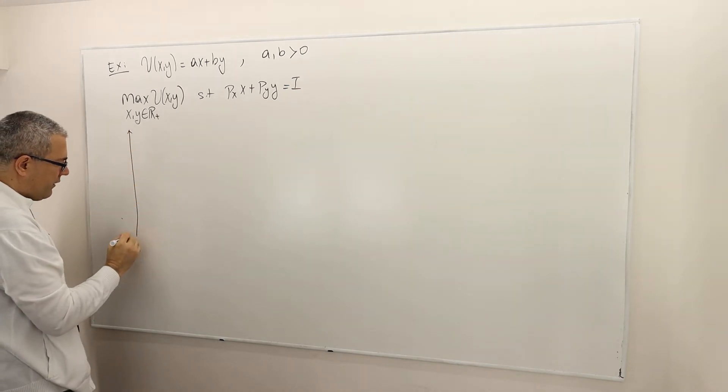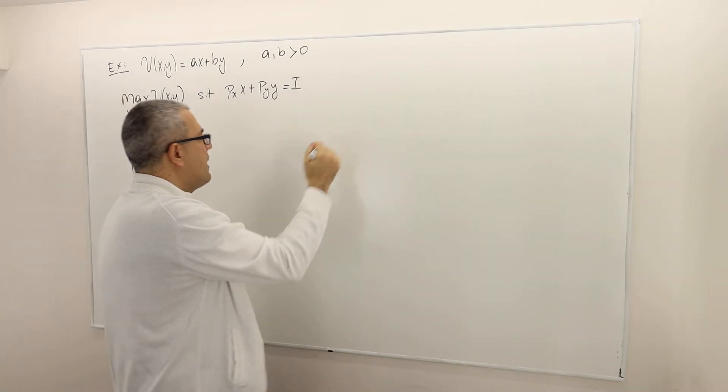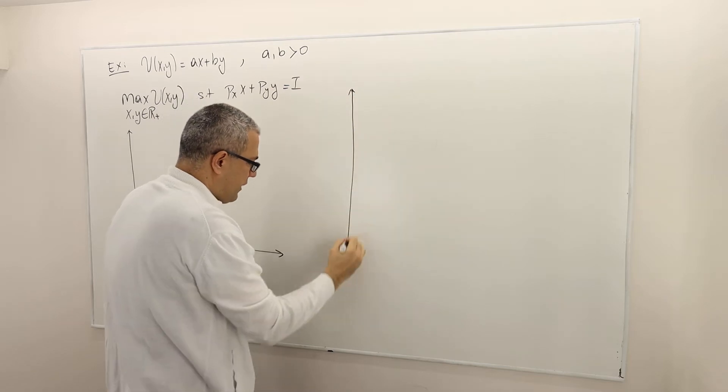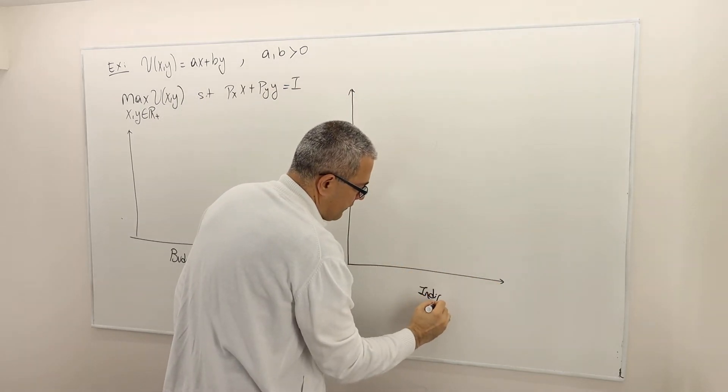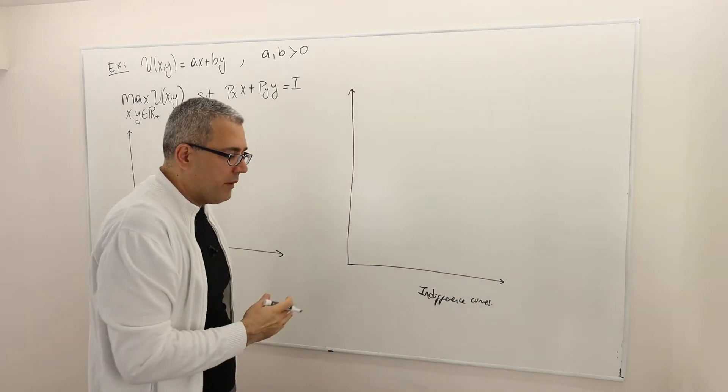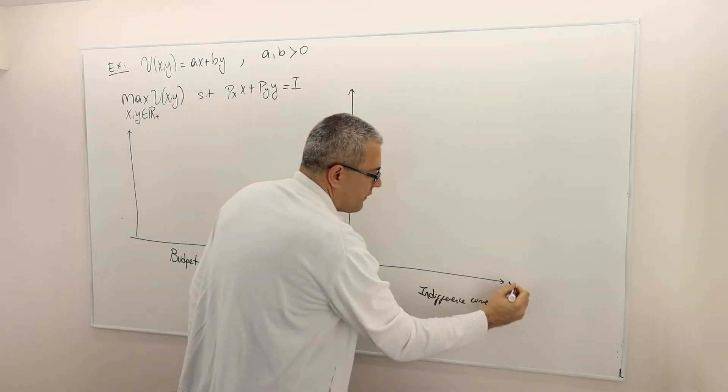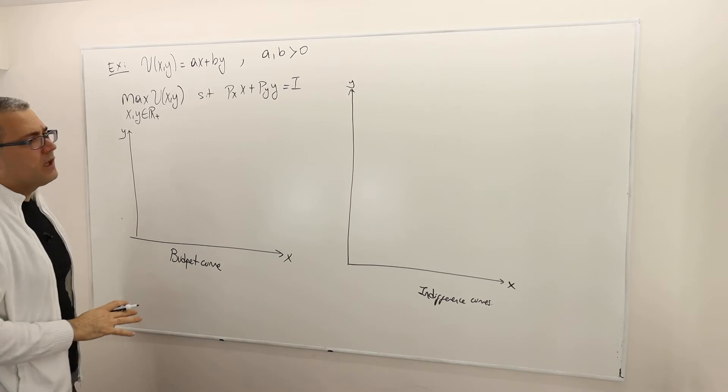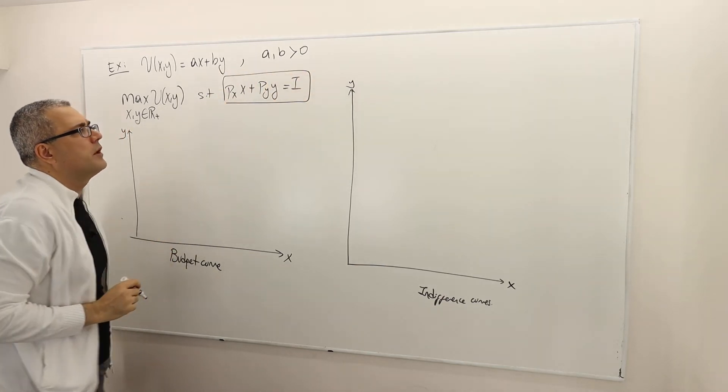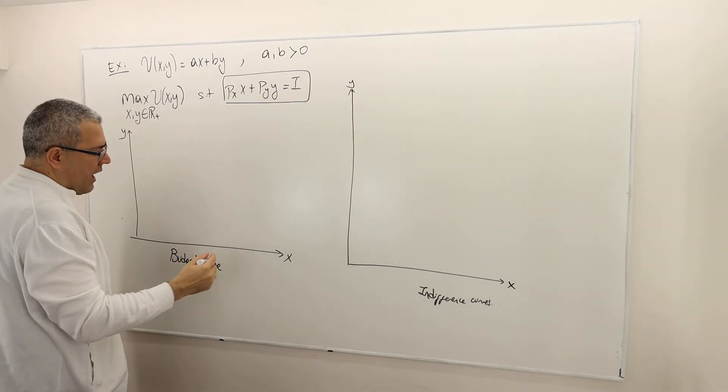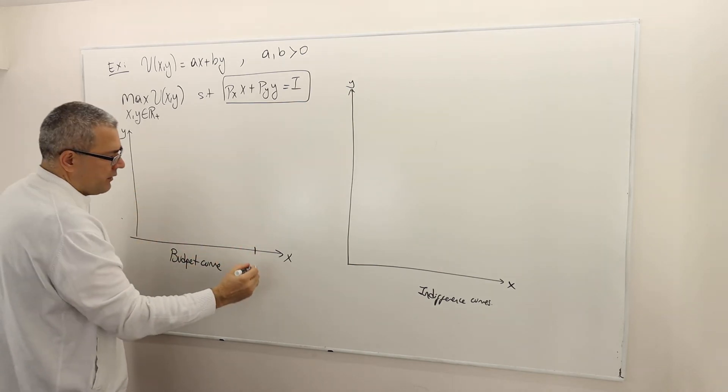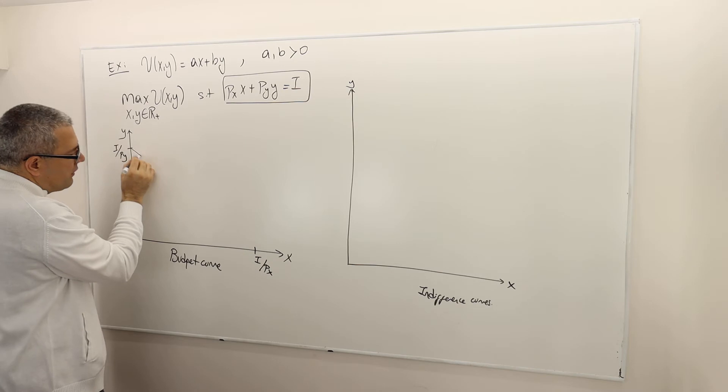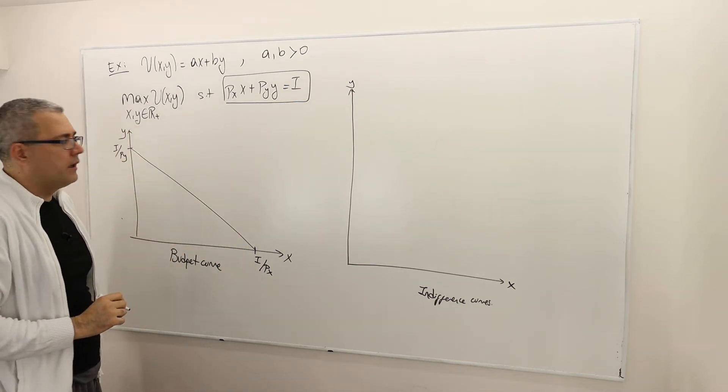So let's start with drawing the budget set. I would like to draw the indifference curves and then bring them together. On both graphs, the horizontal axis is how much X you choose, and on the vertical axis is how much Y you choose. The budget line is simple: PX*X plus PY*Y equals income. It's just one straight line where the X intercept is income divided by PX and the Y intercept is income divided by PY.